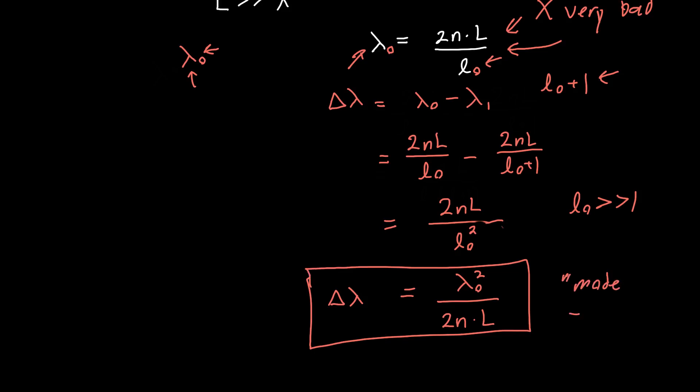So if it's too small, if delta lambda, maybe your design wavelength is like, I don't know, 1,500 nanometers, for example. And this delta lambda is like, I don't know, 0.01 nanometers. Then this might be a problem. You might not be able to distinguish between the multiple wavelengths. And your laser won't be very pure.